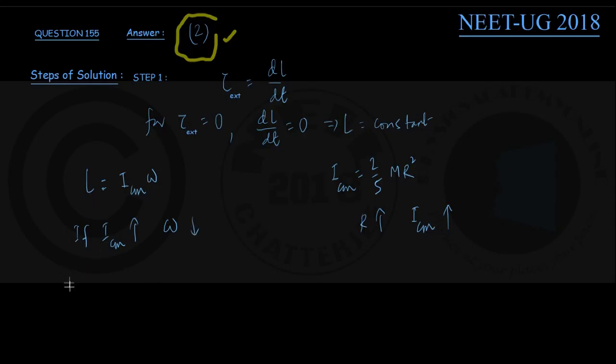And then again, rotational kinetic energy K_r is given by the formula half into I_CM into omega square. We can write this as I_CM into omega whole square divided by twice I_CM. The quantity inside round brackets is nothing but angular momentum, that is L. So L² divided by twice I_CM. So it shows that if I_CM moment of inertia has gone up, L remaining constant, rotational kinetic energy also must have gone down.